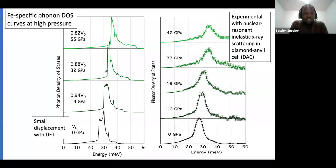Next, we show our results. On our left are our calculations showing the phonon density of states as a function of energy for iron. As we increase the pressure, these peaks are shifting to high energy points, and we also have small displacements observed with our density functional theory calculations.